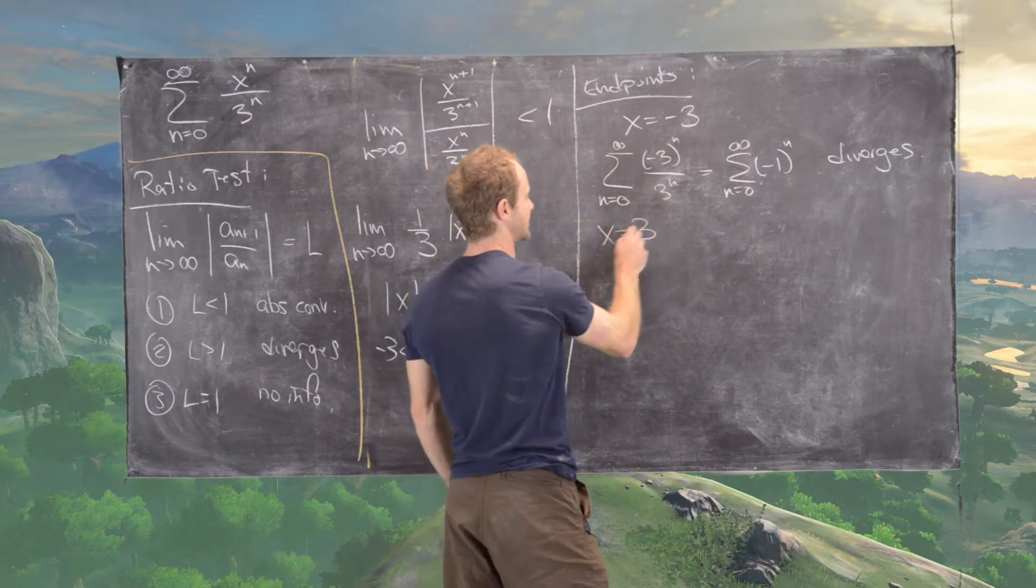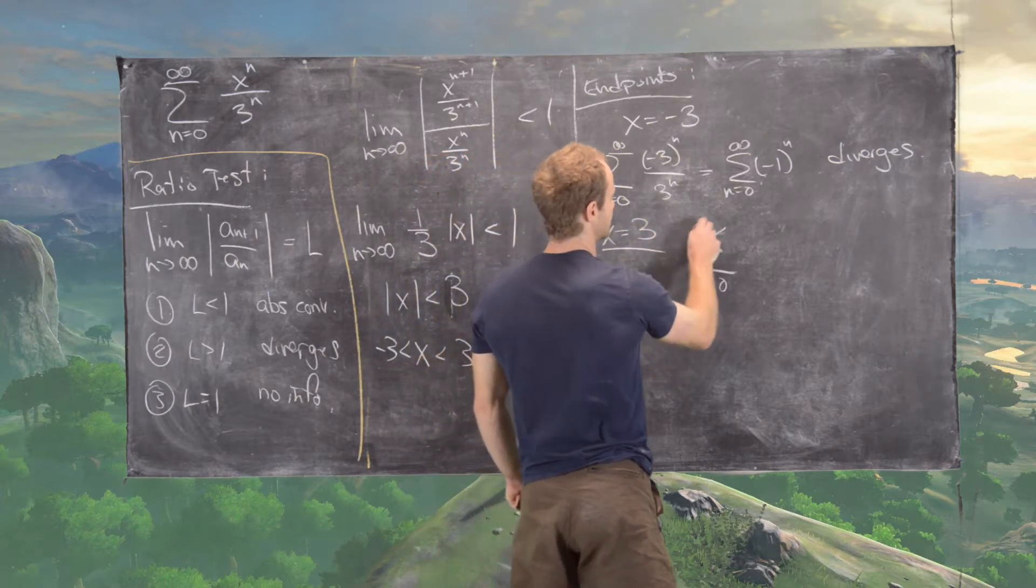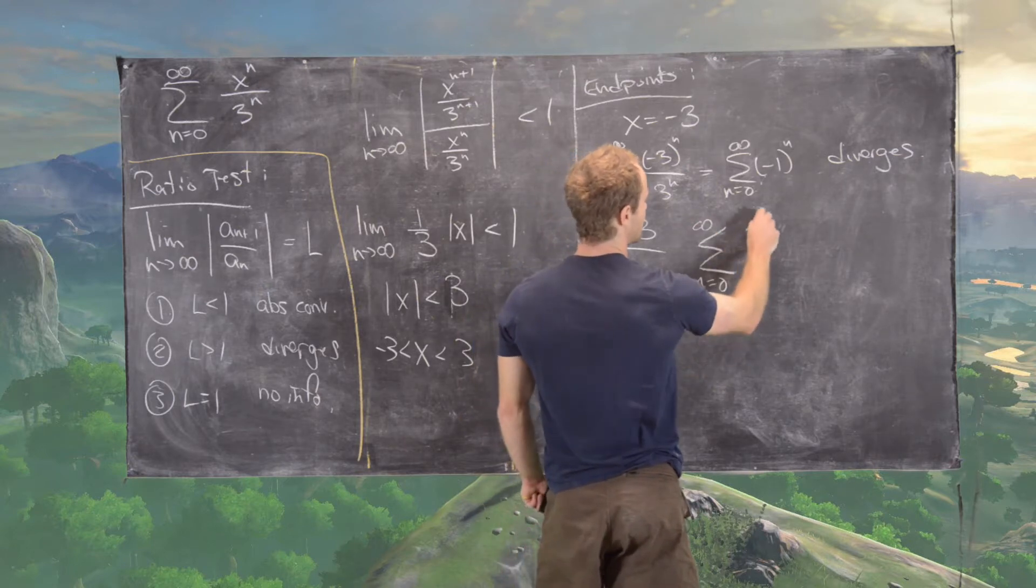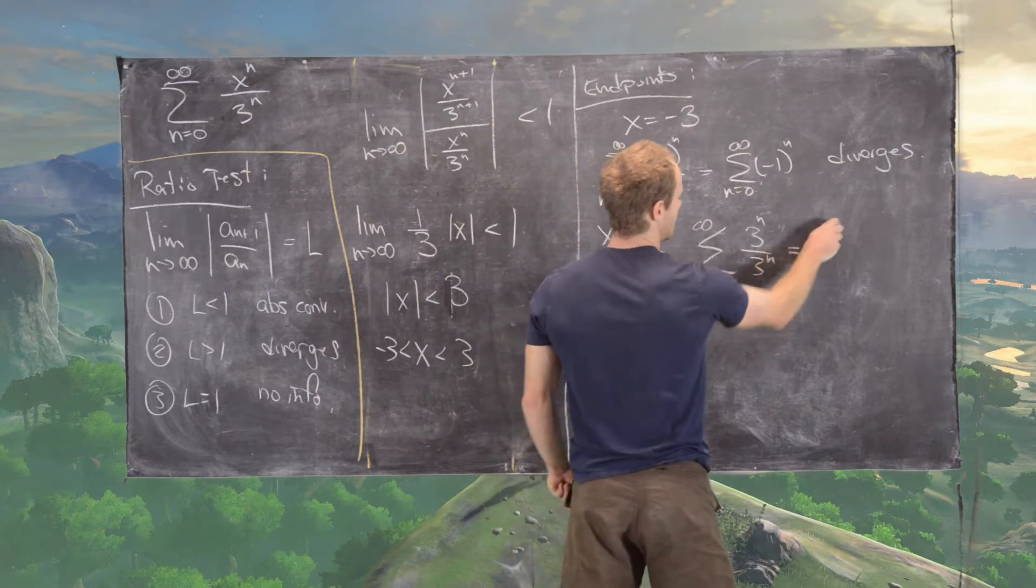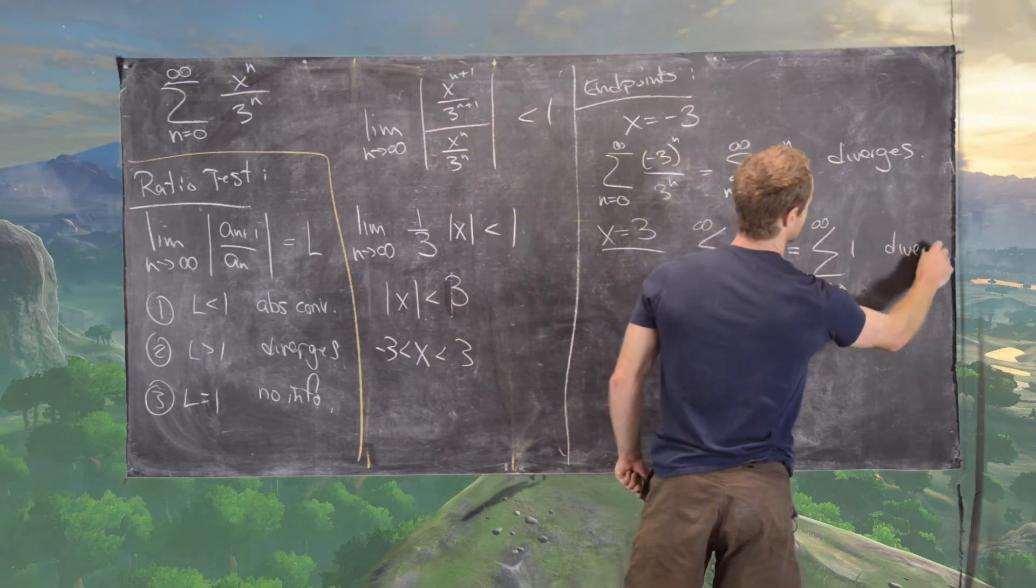And then if we set x equal to 3, we see that this is the sum n equals 0 to infinity of 3 to the n over 3 to the n, which is the sum n equals 0 to infinity of 1, which also diverges.